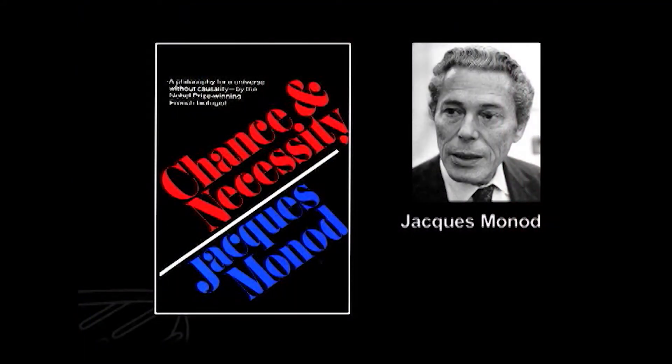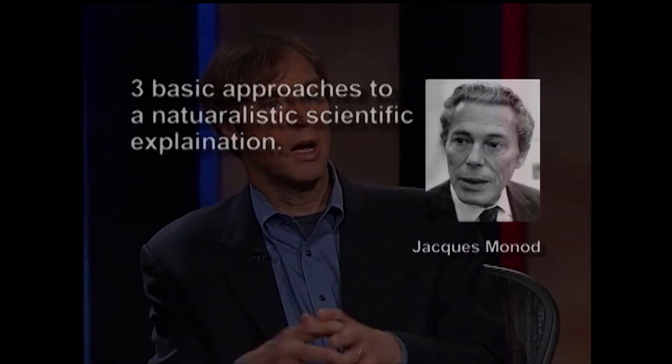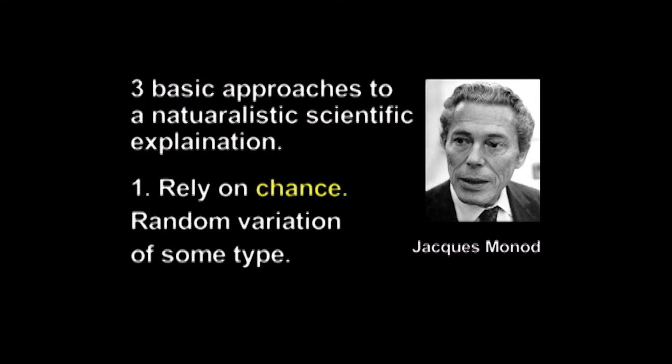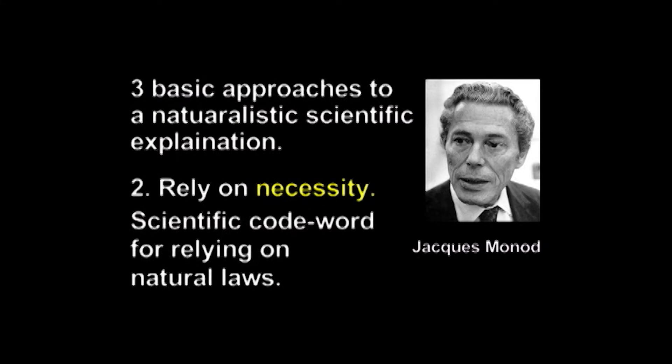There have been a number of completely naturalistic or materialistic theories that have been proposed, and they've been nicely summarized by a French scientist named Jacques Monod. He wrote a book in 1968 — he was one of the colleagues of Francis Crick, the co-discoverer of DNA. Monod wrote that if you're going to be a scientist and explain something, you have some basic approaches: one is to rely on chance, on random variations; another is to rely on what he called necessity, a scientific code word for natural laws. If a ball falls to the earth, a scientist would say it falls by necessity, according to the law of gravity.